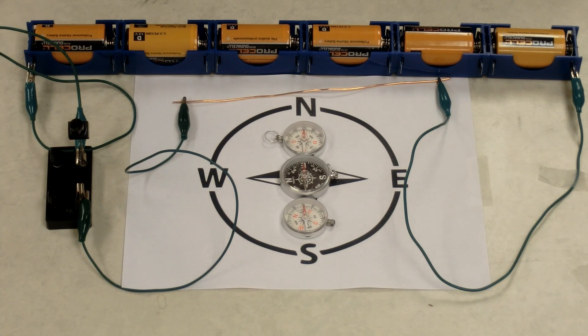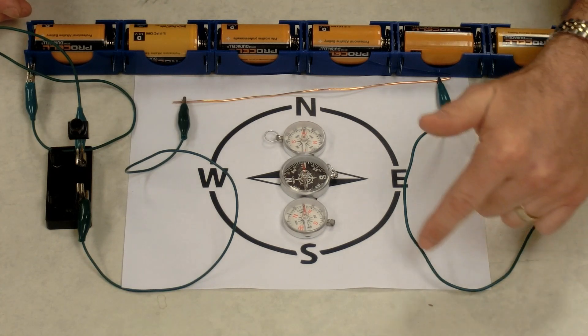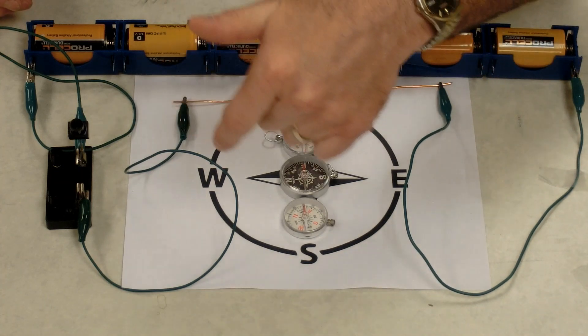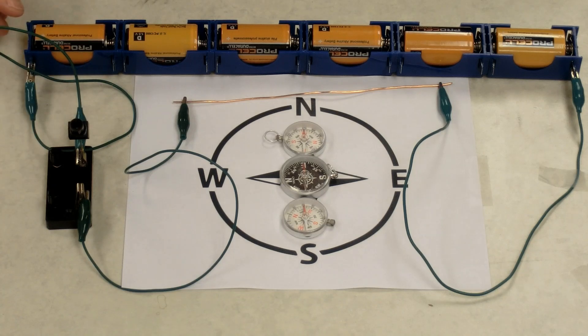It's pretty easy to replicate Oersted's original discovery. In this video clip, I have six dry cells connected in series. That should give us about 9 volts. My circuit goes through a wire to a copper wire, through another wire, through the switch, and back to the battery.